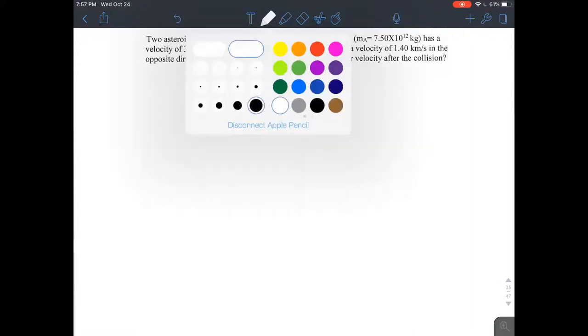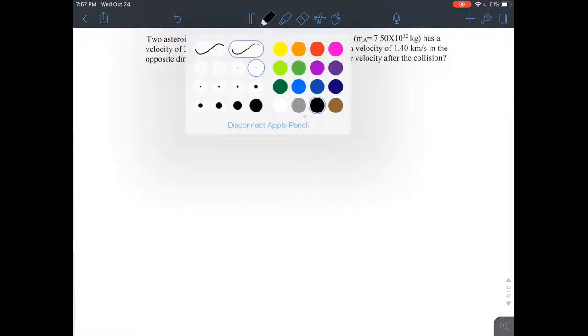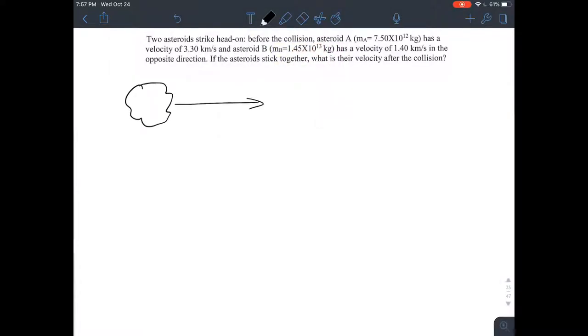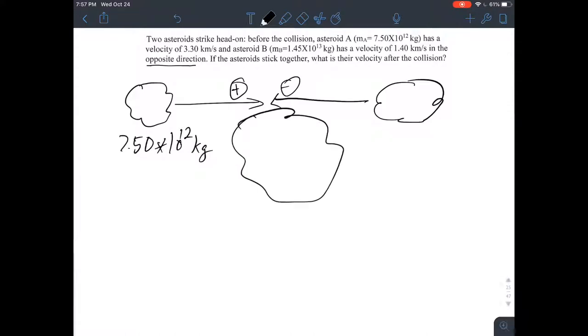So we have this asteroid, 7.50 times 10 to the 12 kilograms, and there's this other asteroid, and they're headed towards each other. I'll call this direction plus and I'll call this direction minus, because they're going in opposite directions. It's a head-on collision. After the collision, they become this big blob, and the question is, which way is it moving, and at what speed, because velocity is both a vector and a number. Here, one thing that I found interesting, it's 3.30 kilometers per second. It's not in meters per second, it's in kilometers per second.